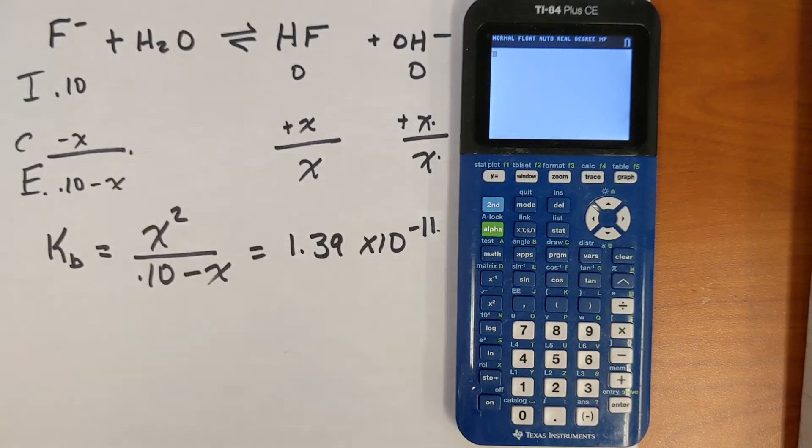All right, we're going to do an example of using a TI-84 plus CE calculator to solve this ICE table. So if you're watching this video, you know what an ICE table is, and you know you could make a small x approximation and come up with some numbers. But I want to show you how you can solve this problem exactly on your TI-84 plus CE.